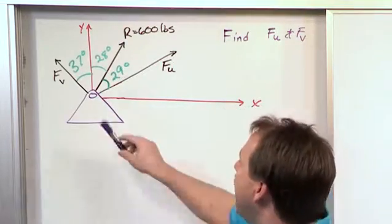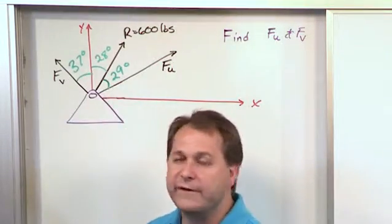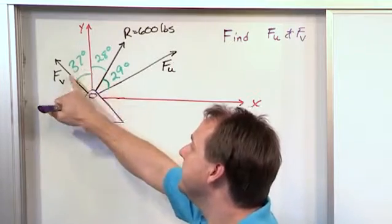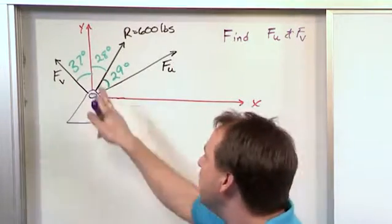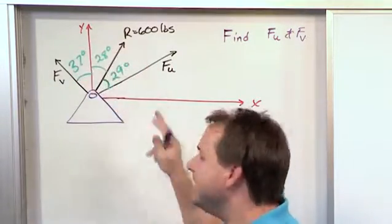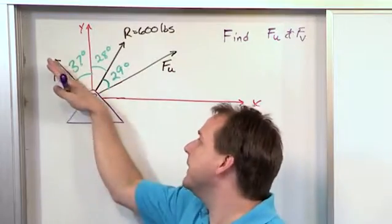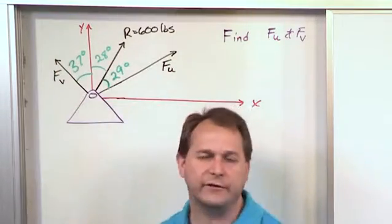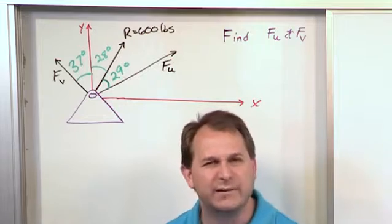So for instance, FV, clearly we know the direction of FV already because we're told that it's 37 degrees from the vertical. And we know that Y is 90 degrees from X, so I could clearly find an angle to the X-axis for this vector. So I already know its direction implicitly in the drawing.